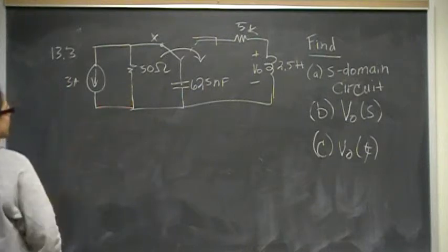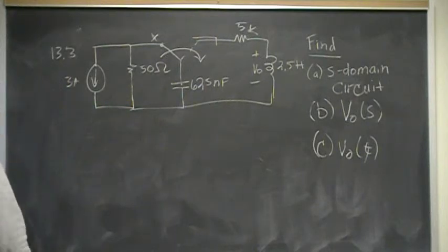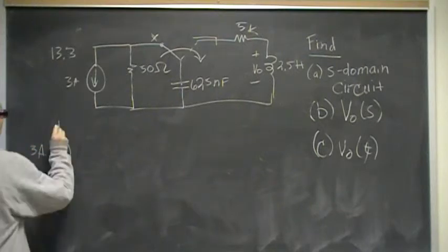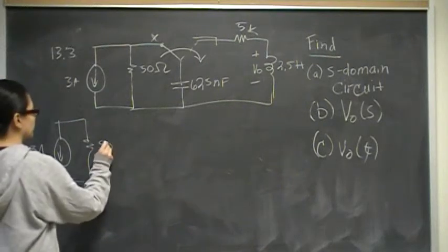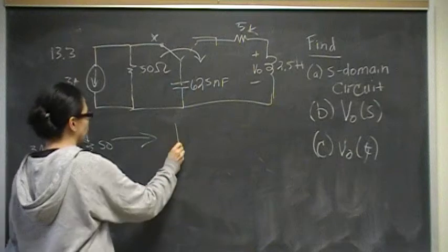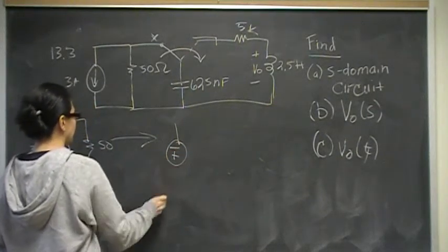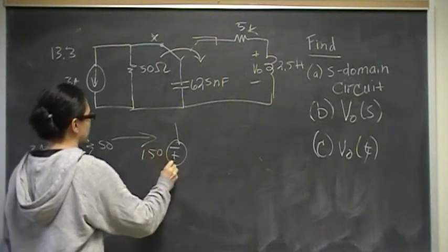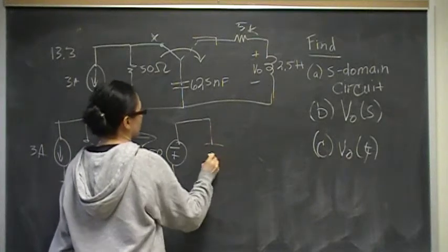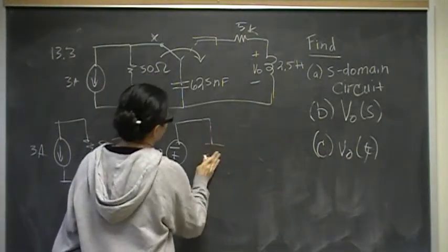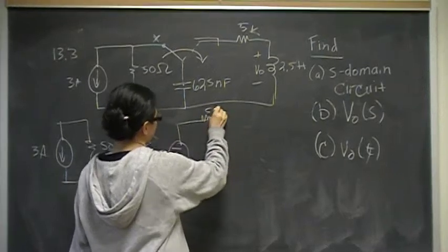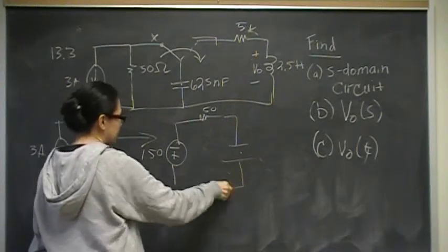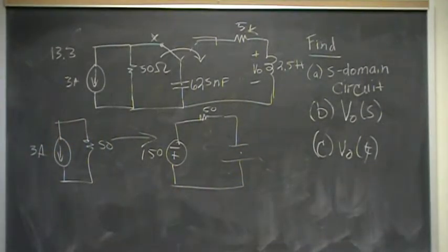We have to do a source transformation to see what that voltage or that capacitor is charged to. When you do the source transformation, you have 3 amps in parallel with 50. That's going to source transform into minus plus. The head of the arrow gets the plus. The tail of the arrow gets the minus. That's going to be 150 volts. That's going to be in series with the 50. Now we can say that the capacitor is an open in DC, and it will receive 150 volts of charge.